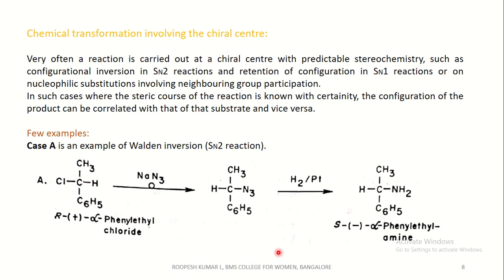Coming to the next method: chemical transformation involving the chiral center. Very often a reaction is carried out at a chiral center with predictable stereochemistry, such as configurational inversion in SN2 reactions and retention of configuration in SN1 reactions, or in nucleophilic substitutions involving neighboring group participation. In such cases, the configuration of the product can be correlated with that of the substrate, and vice versa.